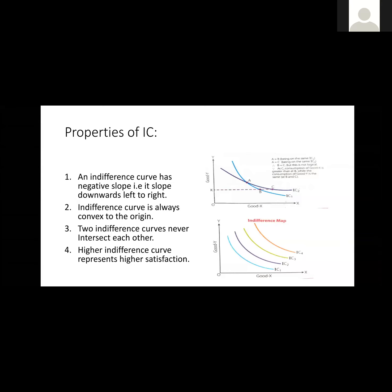Point 2: an indifference curve is always convex to its origin, because of diminishing MRS. MRS declines continuously because of the law of diminishing marginal utility. When the consumer consumes more and more apples, his marginal utility from apples keeps on declining.